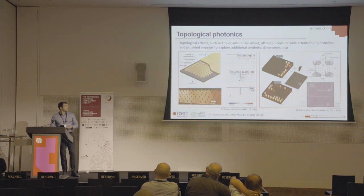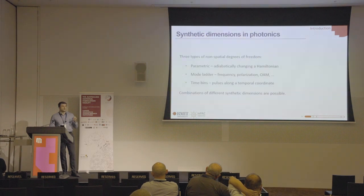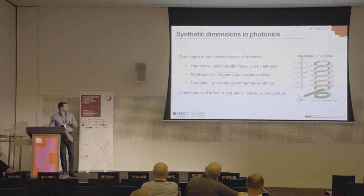A photonic benchtop as well as a photonic chip is typically 2D, and you can go beyond that with great expense and effort. So where can we get more dimensions? There is some space inside the photon itself, so we can borrow some of its properties. What is specifically important in our work is the frequency.